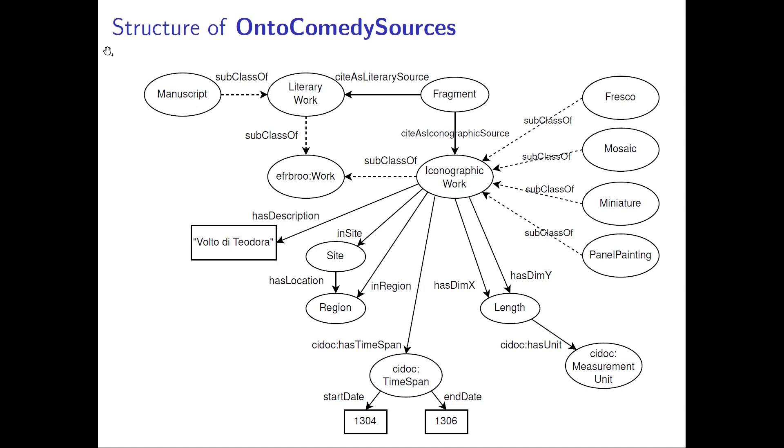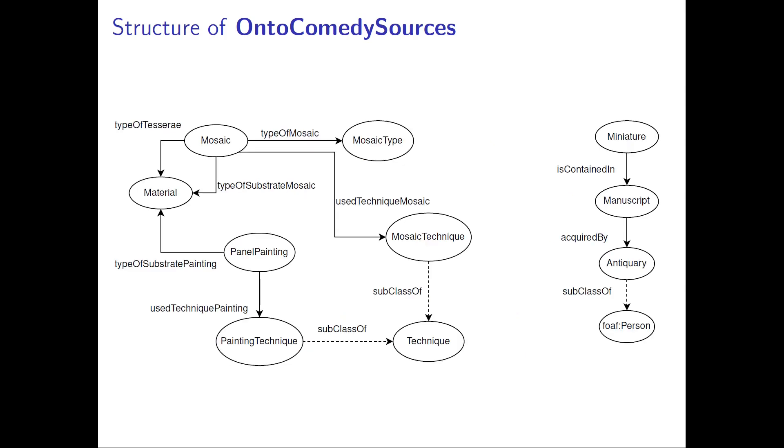The properties cite as literary source and cite as iconographic source are both subproperties of cites. The former has literary work as range, whereas the range of the latter is iconographic work. We also employed some classes from the CIDOC ontology to specify the details of an iconographic work. The ontology provides us with the entities to describe the materials employed in the execution of the mosaics and paintings, along with the used techniques. Since we often have no knowledge concerning the author of a manuscript, we included the class antiquary to designate the antiquarian responsible for the preservation of a given manuscript.